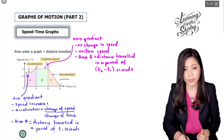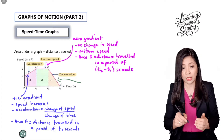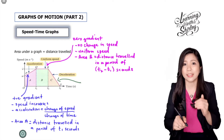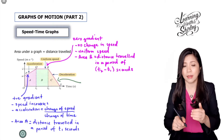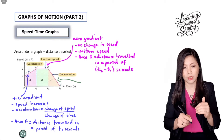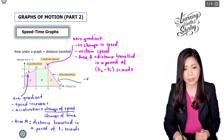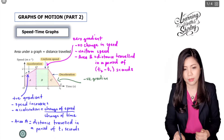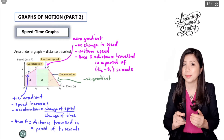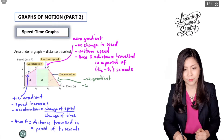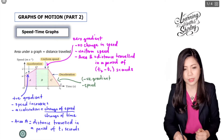The third line RS represents deceleration. Why? Because the gradient is negative, which means the car is slowing down. So here we have a negative gradient — slowing down means the speed decreases.